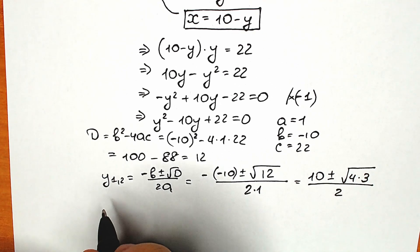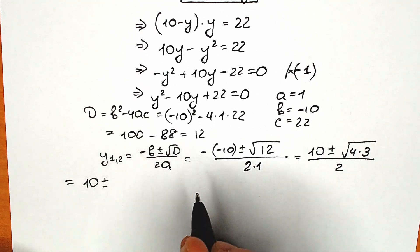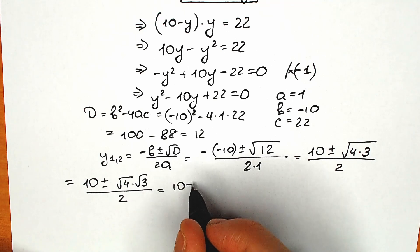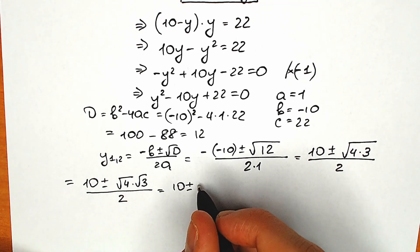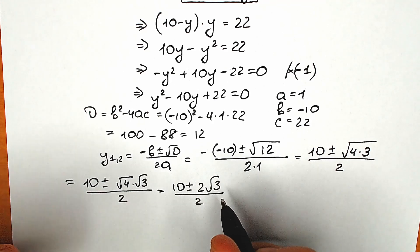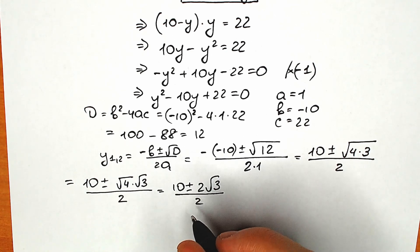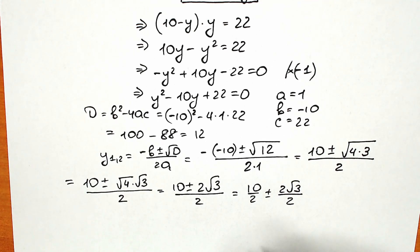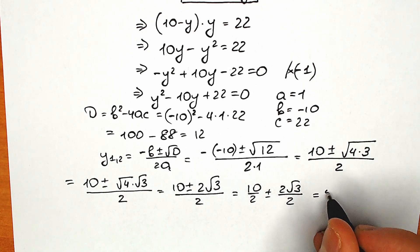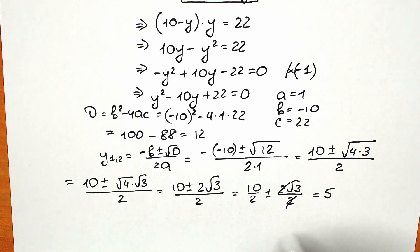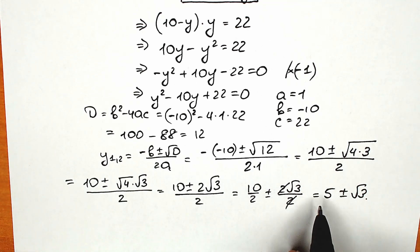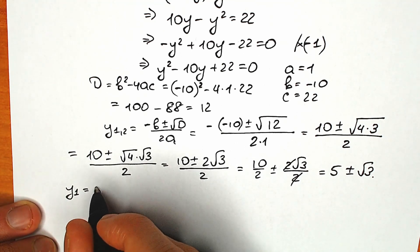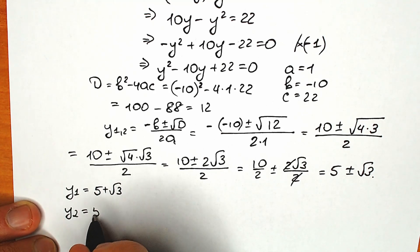Right now we can split this into two square roots. So we have 10 plus or minus square root of 4 times square root of 3, all divided by 2. Square root of 4 equals 2, so we have 2 square root of 3 over 2. Dividing numerator by 2 in parts: 10 divided by 2 equals 5, and 2 square root of 3 divided by 2 gives us plus or minus square root of 3. So y₁ equals 5 plus square root of 3, and y₂ equals 5 minus square root of 3.